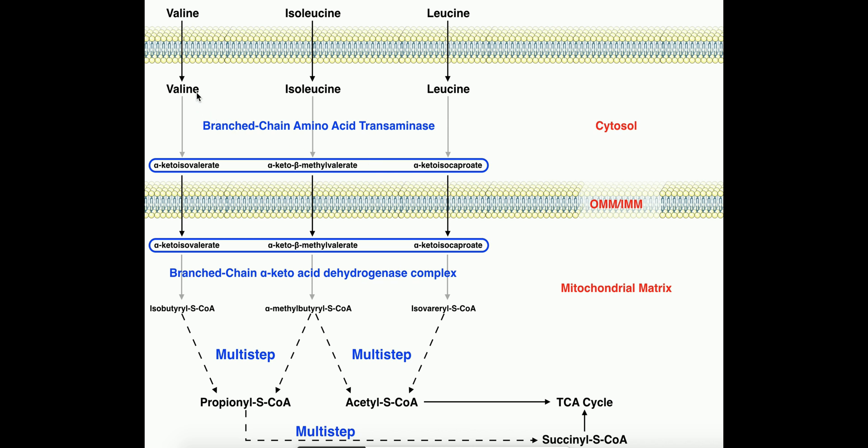For example, valine's corresponding alpha-keto acid, this enzyme converts it into alpha-keto isovalerate. Isoleucine would be converted into alpha-keto-beta-methylvalerate, whereas leucine would be converted into alpha-keto isocaproate. And so these are just the corresponding alpha-keto acids of the amino acids after they react with this enzyme. And this reaction is going to occur in the cytosol, the cytoplasm of the skeletal muscle cell.